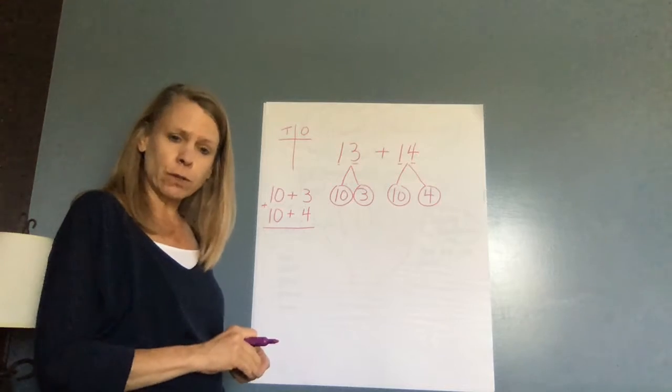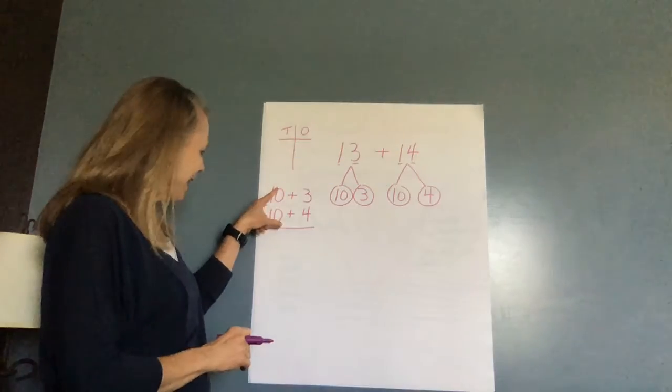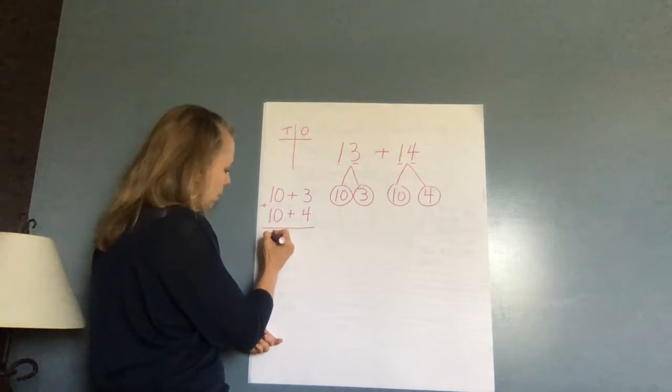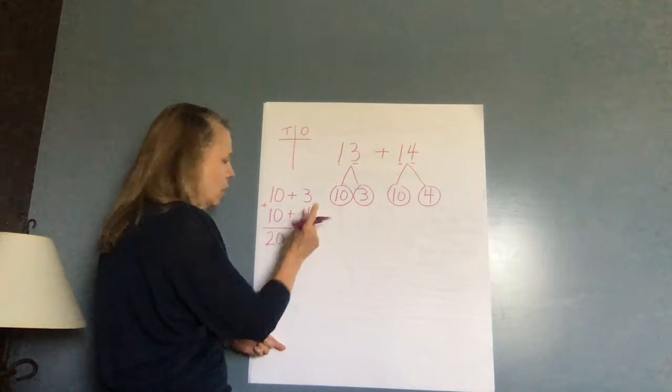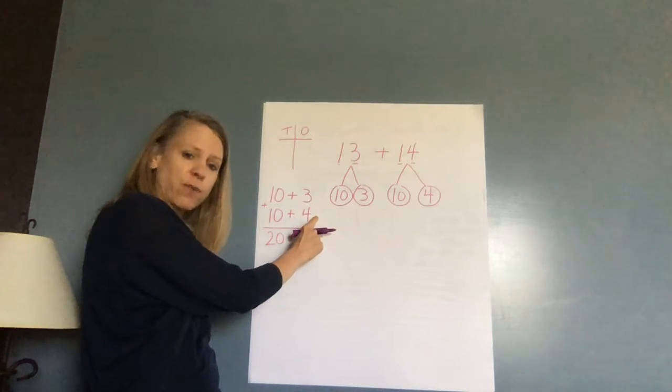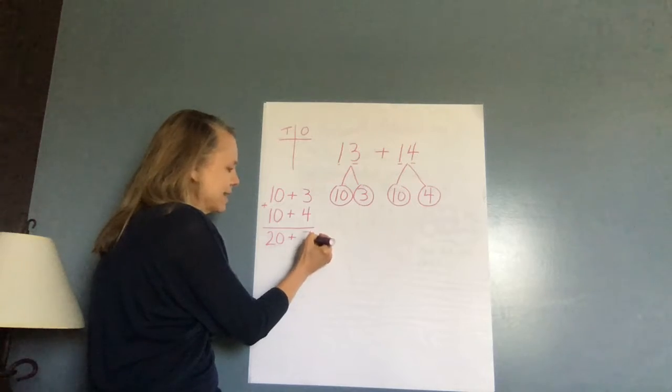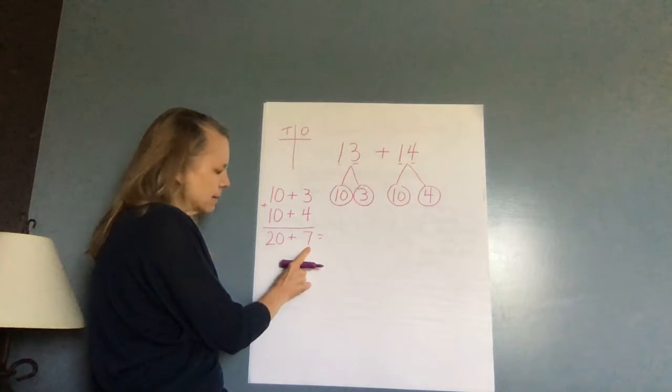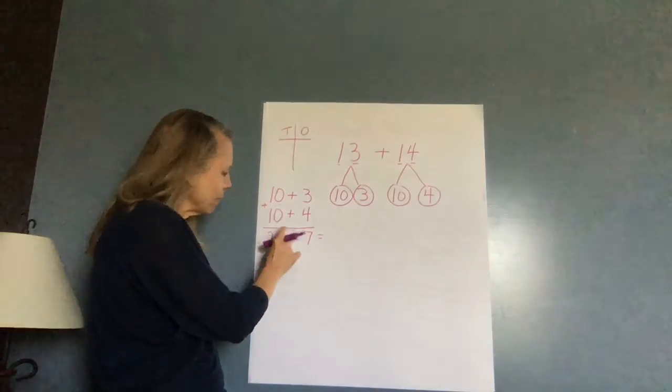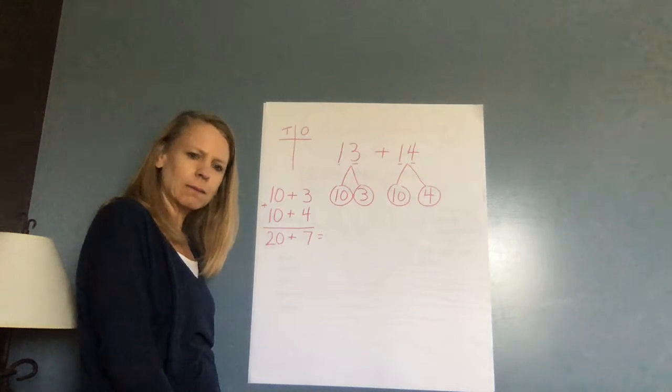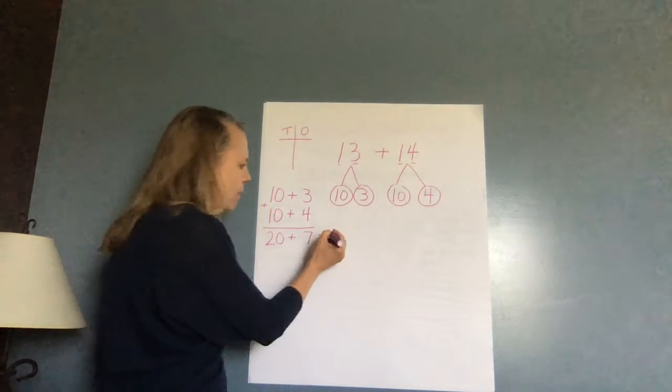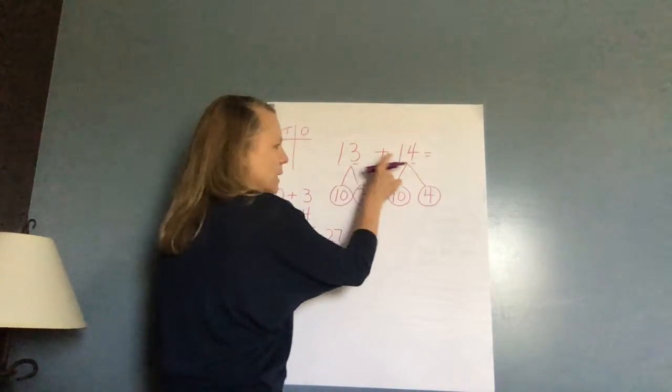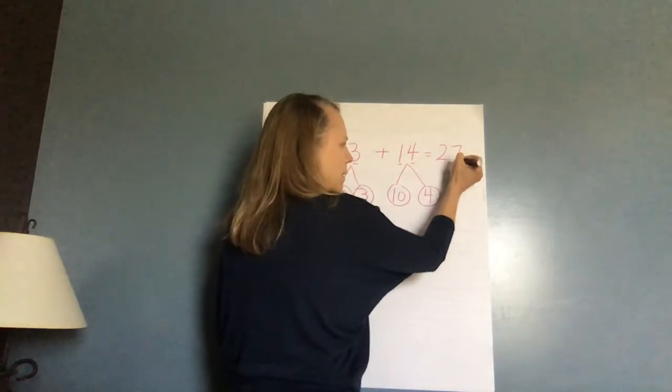So 10 plus 10 more would be what? 20 plus three plus four, which is equal to seven. So now I know if I have 20 plus seven, because remember that seven, I'm just going to put it in that zero spot. So I have 20 plus seven, my answer is 27. So if I come up here, I know that 13 plus 14 is equal to 27.